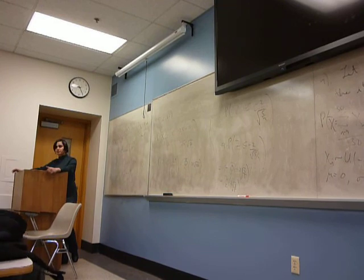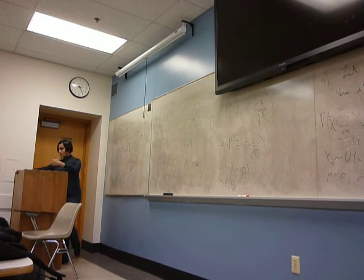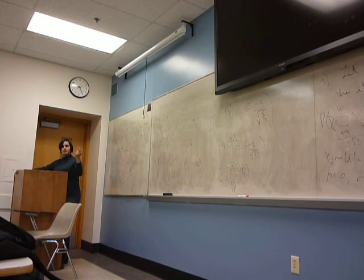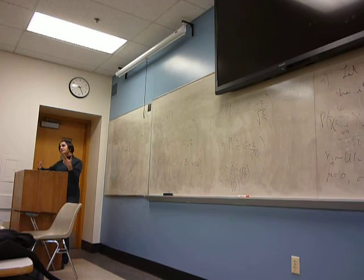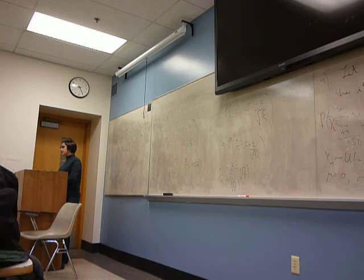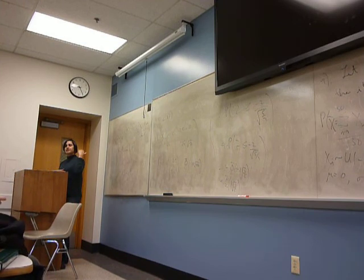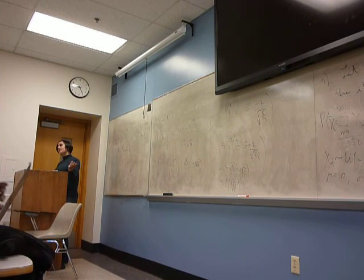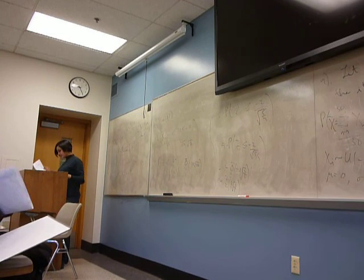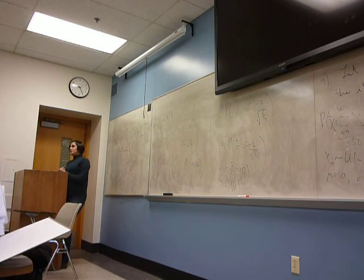You should prepare to answer problems on: first, joint density to calculate probabilities; second, given joint density, talk about independence; third, joint density calculating things like correlation coefficient; fourth, properties of variance and covariance; fifth, moment-generating functions; sixth, central limit theorem; and finally, Chebyshev's inequality. Good luck — it's on Wednesday!